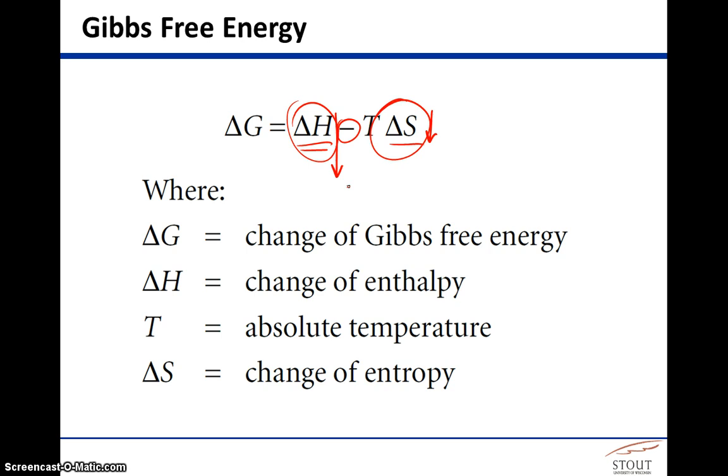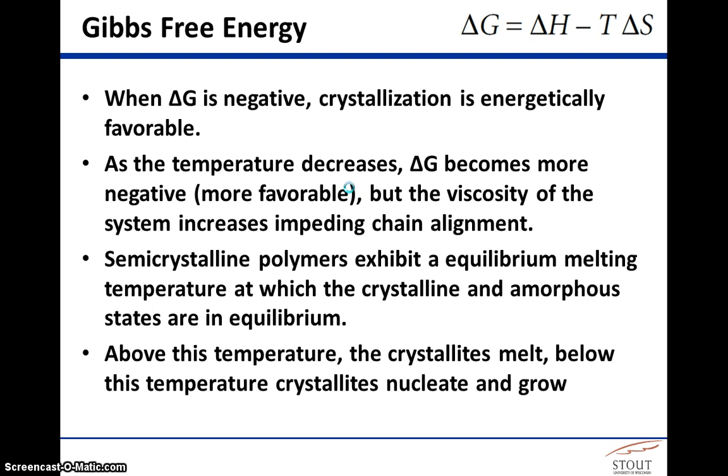But if we just sort of talk our way through the logic here, so when delta G is negative, crystallization is energetically favorable. So as the temperature decreases, delta G becomes more negative, therefore more favorable, but the viscosity of the system during cooling also increases. It thickens up, meaning that it's harder for those chains to align.